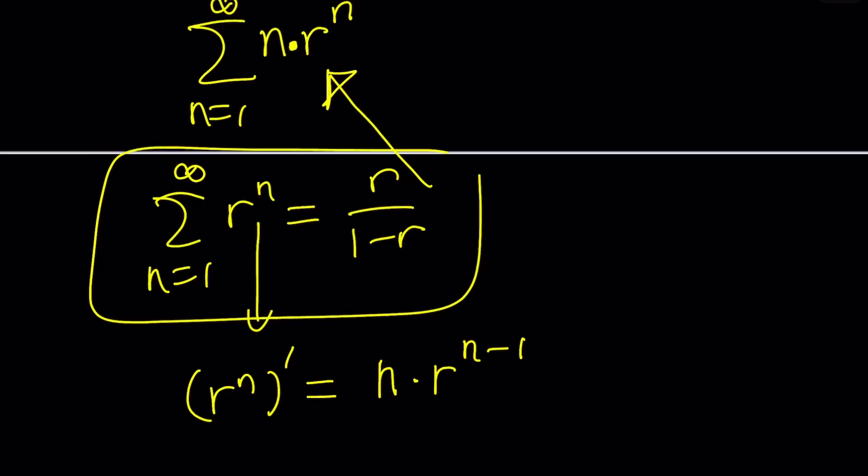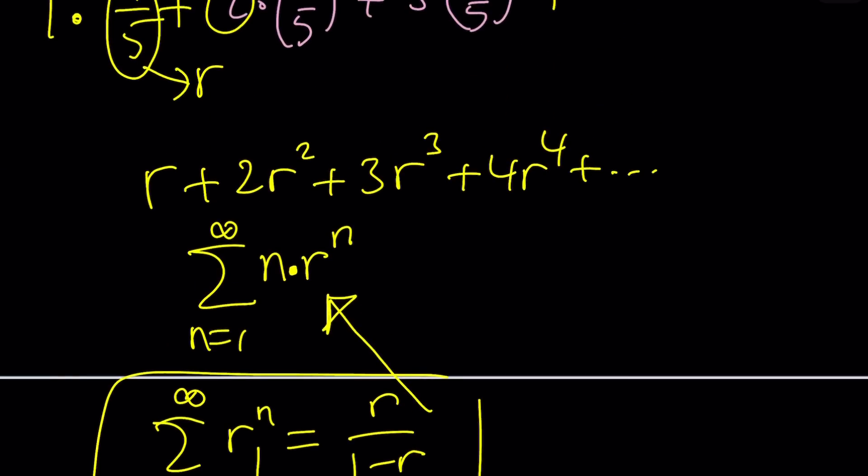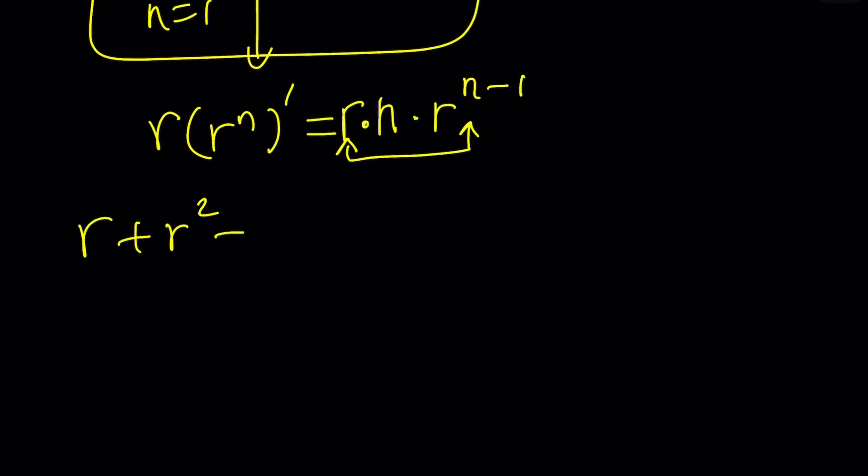Wait a minute. You did not get n r to the n. That's what we need. But don't worry. We can multiply both sides by r, and that'll do the trick, because now this will give you r to the power of n. It's easy to adjust because r is constant. n is a variable here, it's the index. So then what I can do is take this sum, which is r plus r squared plus r cubed, and then differentiate it. Let's call this f of r.